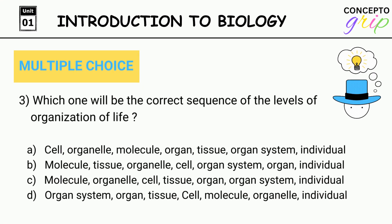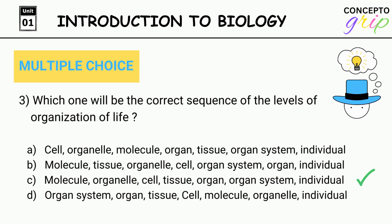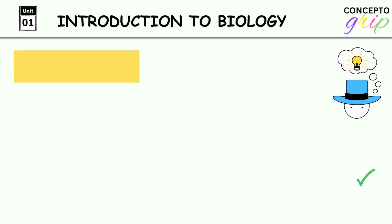Question 3. Which one will be the correct sequence of the levels of organization of life? A. Cell, organelle, molecule, organ, tissue, organ system, individual. B. Molecule, tissue, organelle, cell, organ system, organ, individual. C. Molecule, organelle, cell, tissue, organ, organ system, individual. D. Organ system, organ tissue, cell, molecule, organelle, individual. Correct option is C: Molecule, organelle, cell, tissue, organ, organ system, individual.